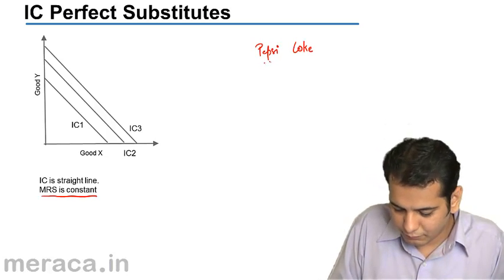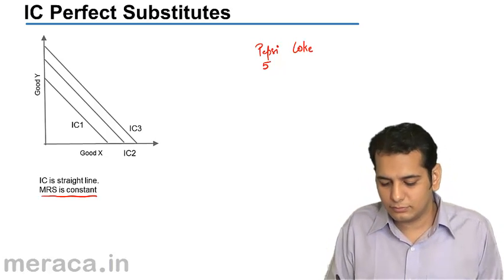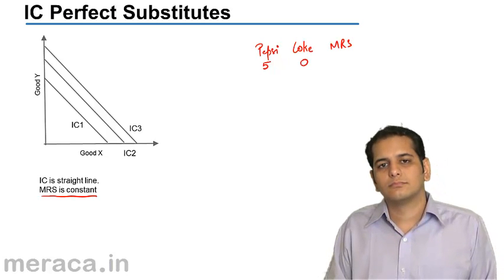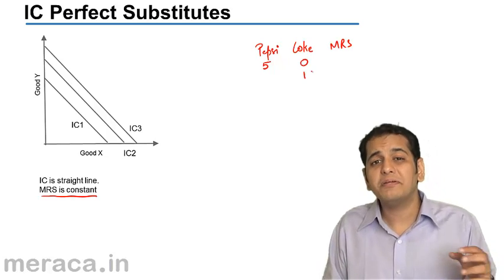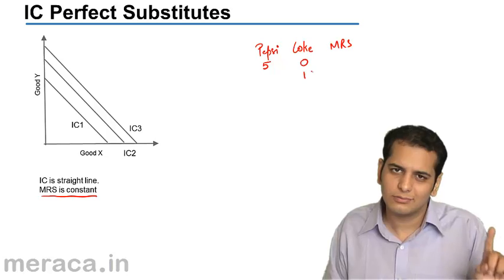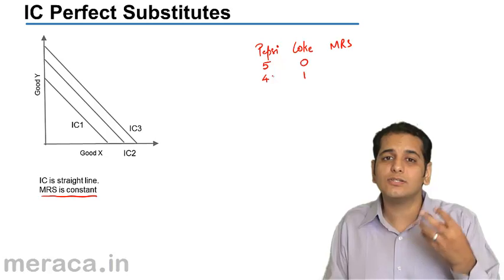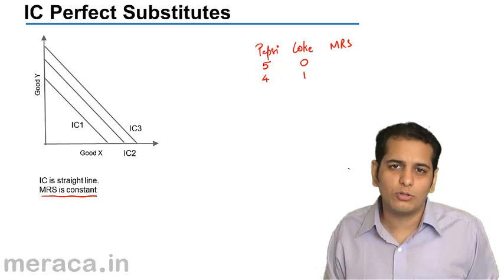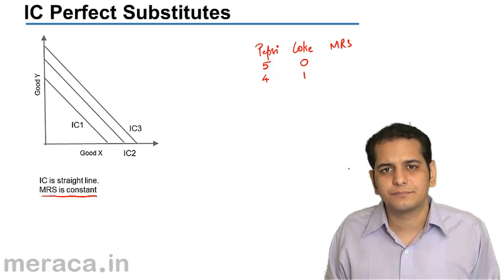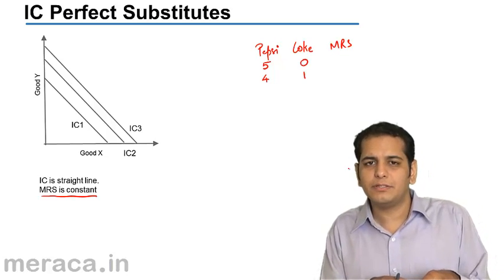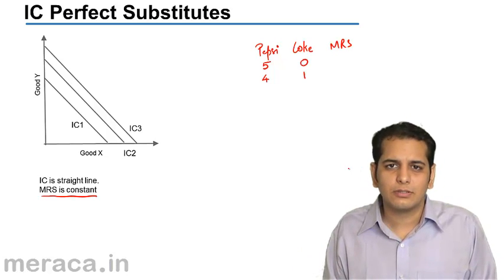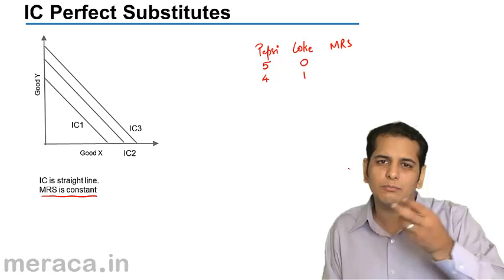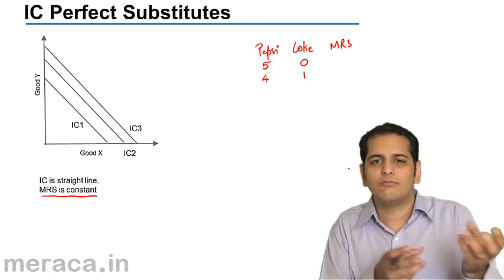Let's assume that you have 5 bottles of Pepsi and 0 bottles of Coke. Now, if you want 1 bottle of Coke, how many bottles of Pepsi will you be ready to give? Only 1. So what will remain is 4 bottles with you. Why will you give only 1 bottle of Pepsi when I give you 1 bottle of Coke? It is because they are perfect substitutes. Having a bottle of Pepsi or a bottle of Coke does not make any difference — a bottle of Coke can be exchanged for 1 bottle of Pepsi only.